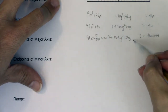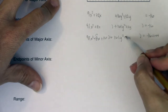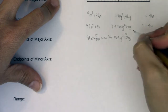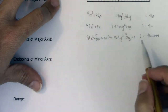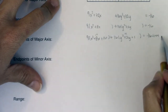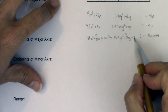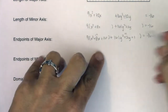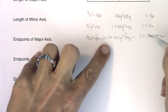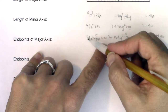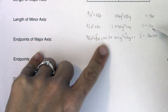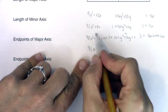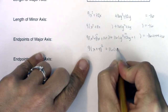Now for the y terms: half of positive 2 is positive 1, and positive 1 squared is positive 1. Typically you'd add 1 to both sides, but you actually added 1 times 16, so I'm adding 16 to the other side of the equation. Whatever you add to one side, balance it on the other — and if you've factored out a GCF, don't forget to multiply. This gives us 9 times (x plus 4) squared plus 16 times (y plus 1) squared.